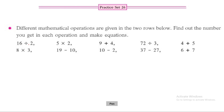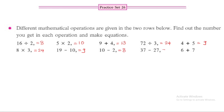Now, the operations in the first row are: 16 divided by 2 is 8; 5 into 2 is 10; 9 plus 4 is 13; 72 divided by 3 is 24; 4 plus 5 is 9. The second row is: 8 into 3 is 24; 19 minus 10 is 9; 10 minus 2 is 8; 37 minus 27 is 10; 6 plus 7 is 13.